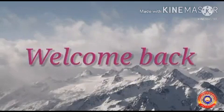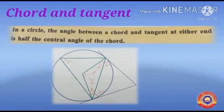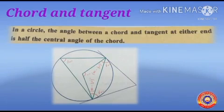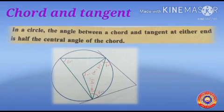Hi children, welcome back to our class. Today we shall discuss about tangent and chord. In a circle, the angle between a chord and a tangent at either end is half the central angle of the chord. Here x is the central angle of the circle formed from the given chord.